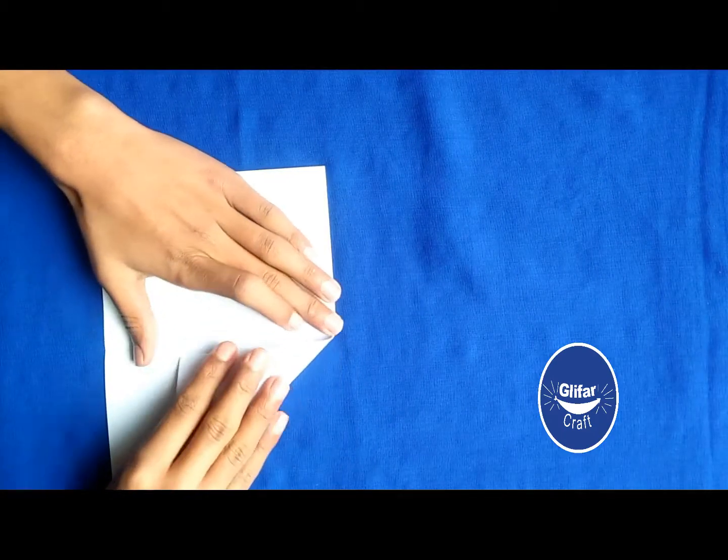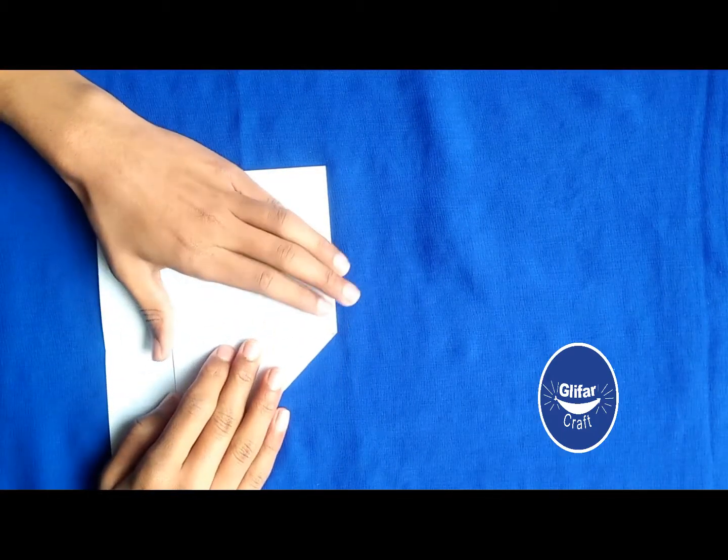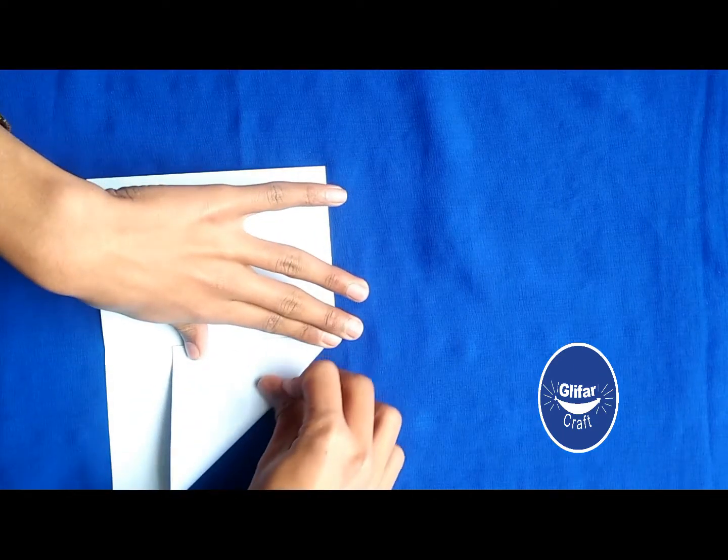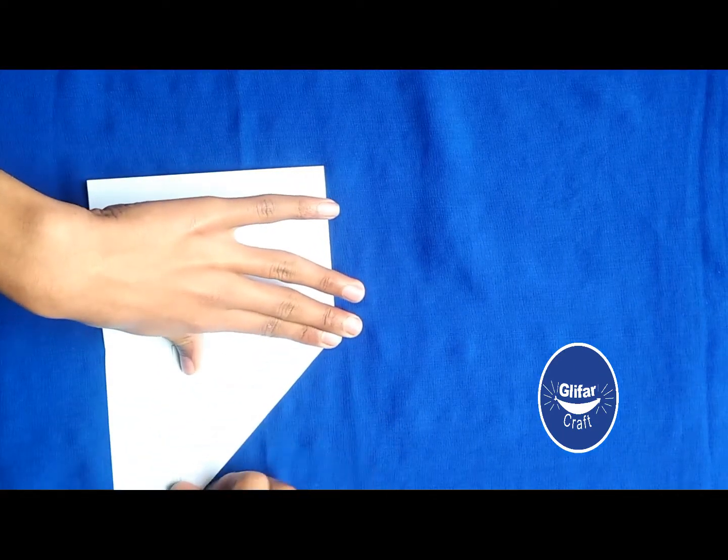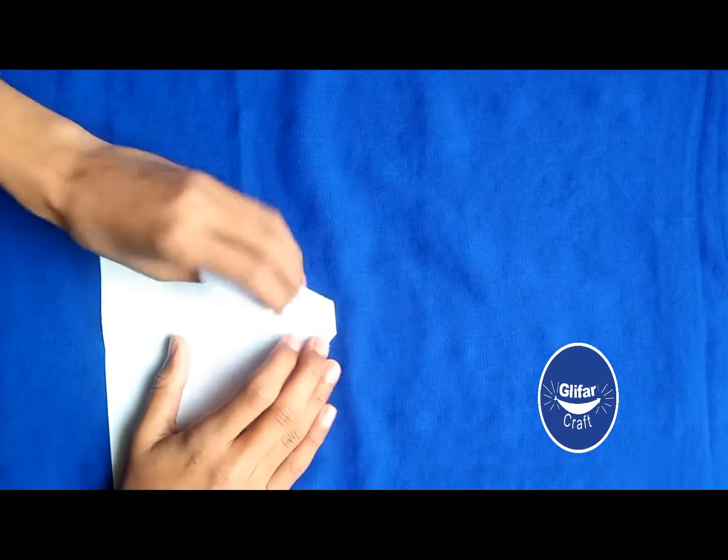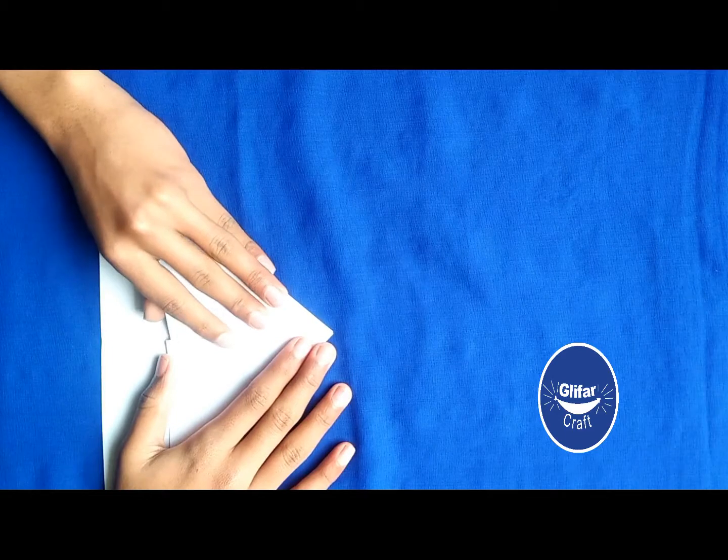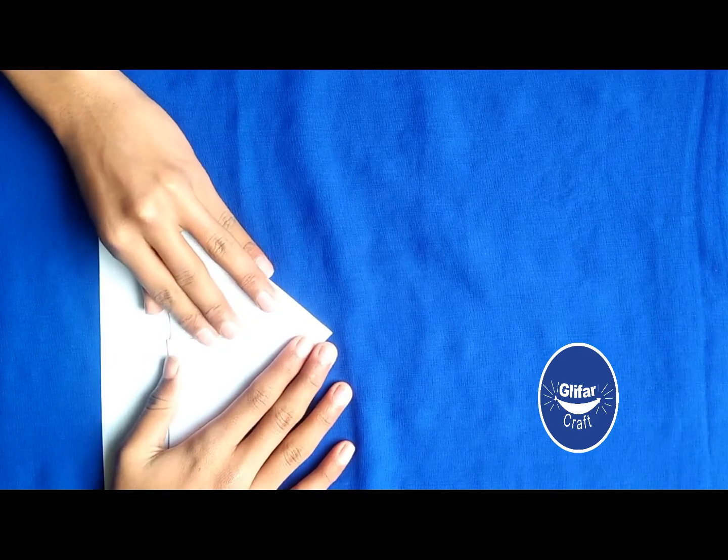Now, fold the right corner along the center to make a triangle. Once again, fold the left corner along the center to make a triangle and crease well.